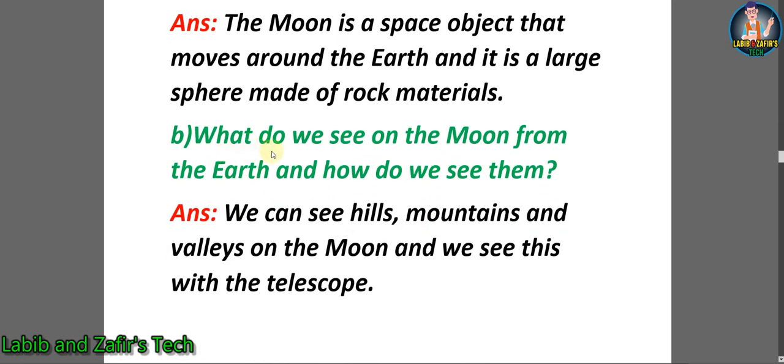B. What do we see on the Moon from the Earth and how do we see them? Answer: We can see hills, mountains and valleys on the Moon and we see these with the telescope.